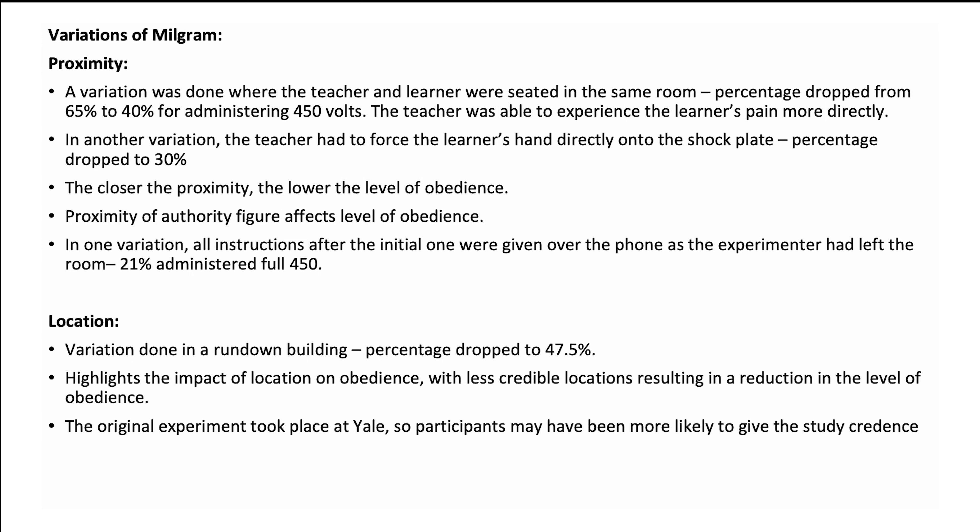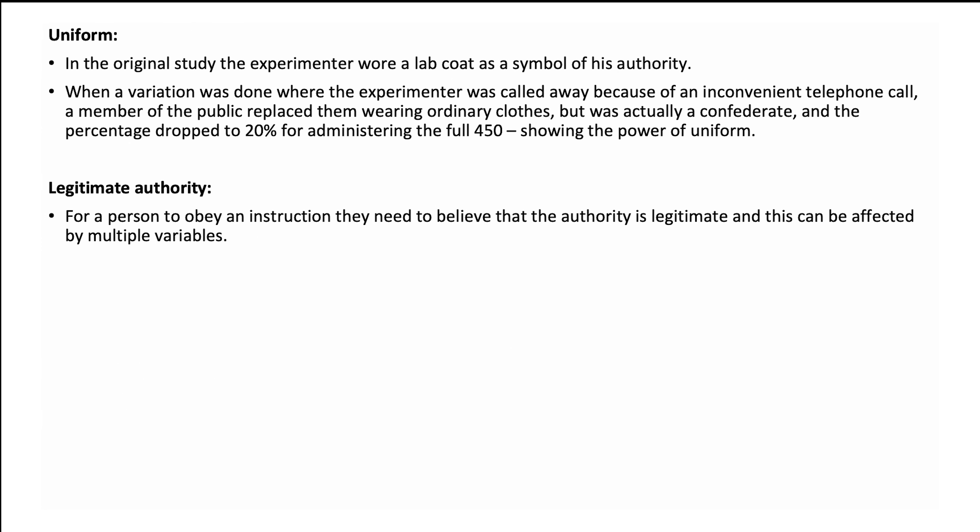The second variation is about location. In the original experiment it was conducted at Yale University, which was very prestigious, whereas a variation was done in a rundown building instead. The percentage of obedience dropped to 47.5% for those who administered the full 450 volts, highlighting the impact of location on obedience, with less credible locations resulting in a reduction in obedience.